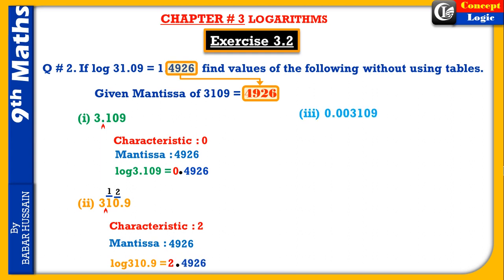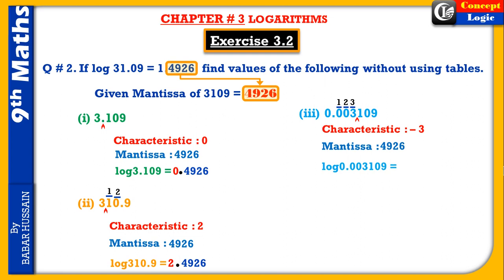Third part: 0.000310 9 — first non-zero digit سے پہلے one, two, three digits ہیں، تو characteristic minus three ہے، کیونکہ decimal left hand side پر ہے۔ Mantissa given ہے: four nine two six۔ Log لکھتے وقت characteristic کے اوپر negative لکھیں گے (bar notation)، پھر decimal، پھر mantissa لکھ دیں۔